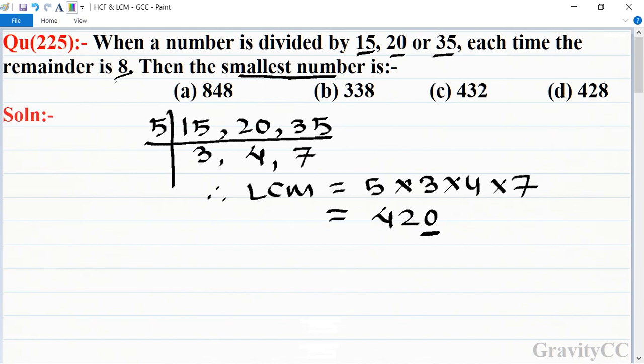But according to the question, we need in every case the remainder should be 8 when divided by 15, 20, and 35.